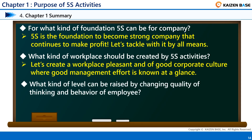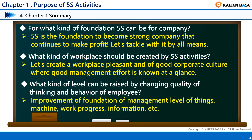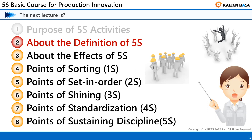Question 3: What kind of level can be raised by changing the quality of thinking and behavior of employees? Answer: Aim for improvement of the foundation of management level — things, machines, work progress, information, etc. Based on the above, we will do serious 5S activities with a solid understanding of the essence and transform the company into a strong company. This concludes the lecture: 5S basic course for production innovation, Chapter 1, purpose of 5S activities.